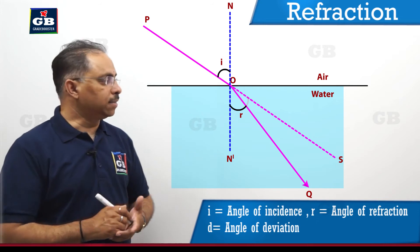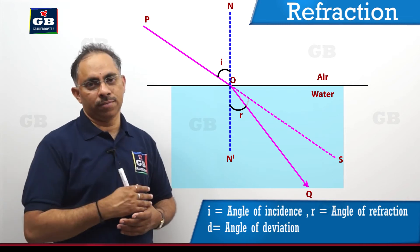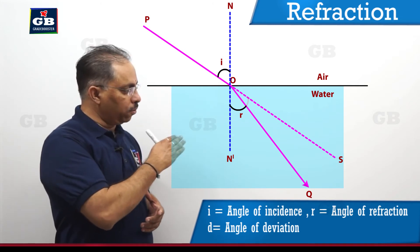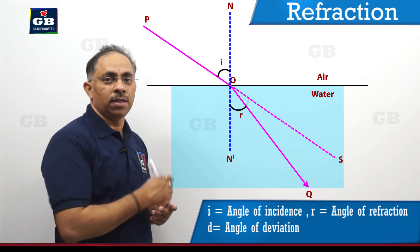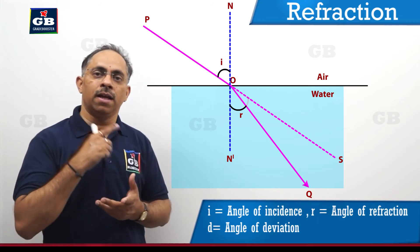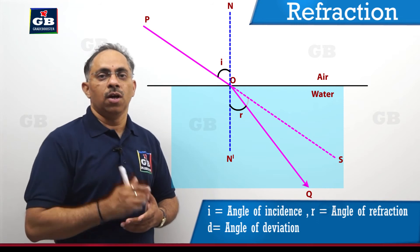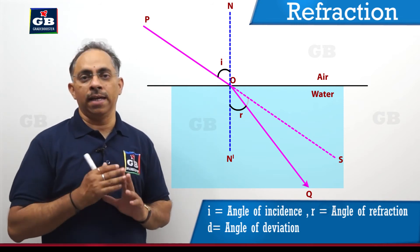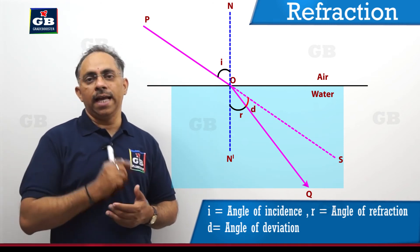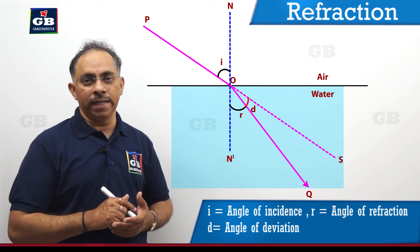If you see the light ray — instead of going along direction POS, which is the original direction of the incident ray — if there is no water, the light ray would follow path POS. But because of the presence of the water surface, it is bending and traveling, deviating from its path and going along POQ. How much is it getting deviated? It is measured by an angle — the angle between OS and OQ — and this is called the angle of deviation, generally denoted by d in lower case.